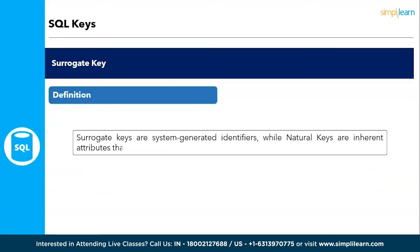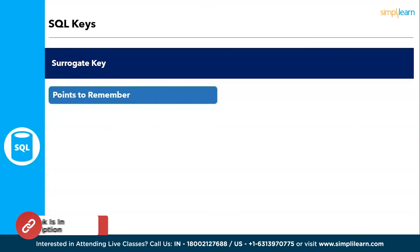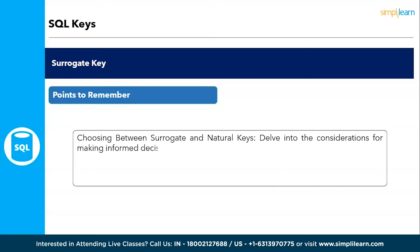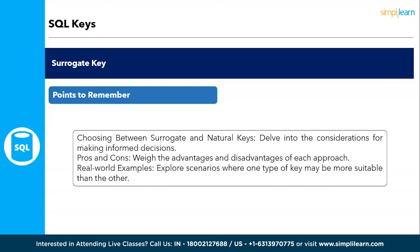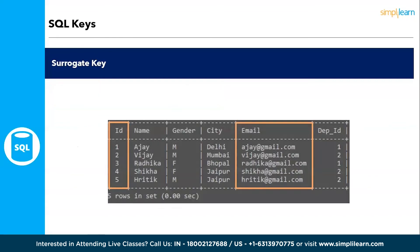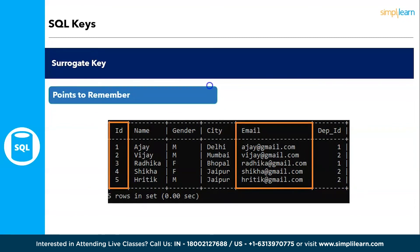Next are surrogate keys. Surrogate keys are system-generated identifiers, while natural keys are inherent attributes that serve as unique identifiers. Points to remember include choosing between surrogate and natural keys, the pros and cons of each approach, and real-world scenarios where one type may be more suitable. A surrogate key is a unique identifier for a record — for example, an email ID is unique to each employee and can be used to identify a specific record, such as accessing the fifth record for Hrithik via his email ID.